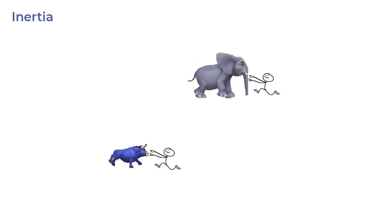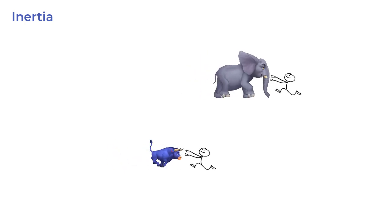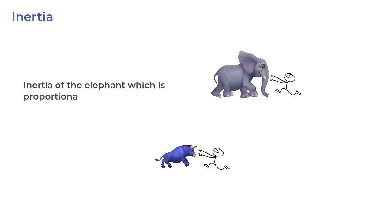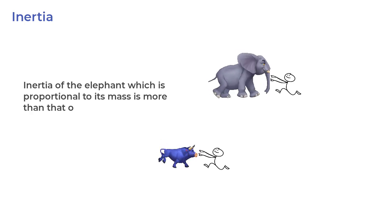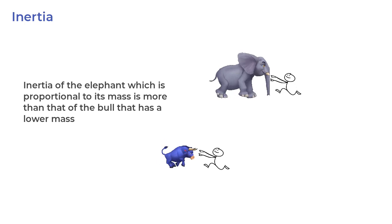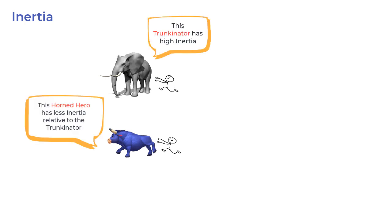If you have an elephant running towards you, it is more difficult to stop it compared to a bull running towards you. And we say that the inertia of the elephant, which is proportional to its mass, is more than that of the bull that has a lower mass. Likewise, if both the elephant and the bull are stationary, it is again more difficult to move the elephant than the bull, which is again because the inertia of the elephant is more than that of the bull owing to its mass.